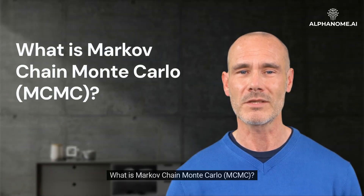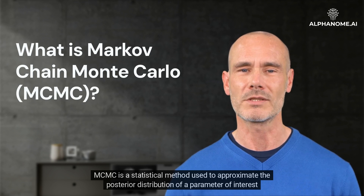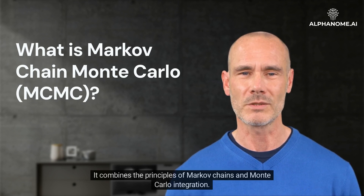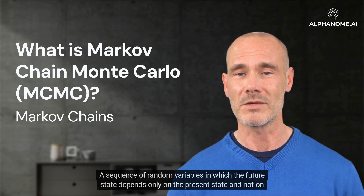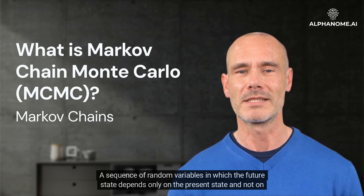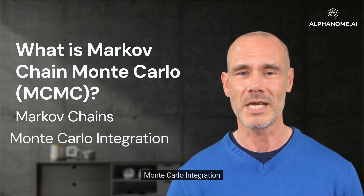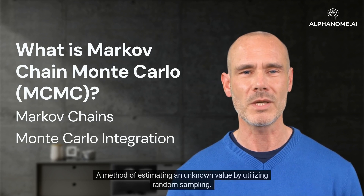What is Markov Chain Monte Carlo, MCMC? MCMC is a statistical method used to approximate the posterior distribution of a parameter of interest by drawing samples in a way that mimics the properties of that distribution. It combines the principles of Markov Chains and Monte Carlo integration. Markov Chains: a sequence of random variables in which the future state depends only on the present state and not on the states that preceded it. Monte Carlo integration: a method of estimating an unknown value by utilizing random sampling.